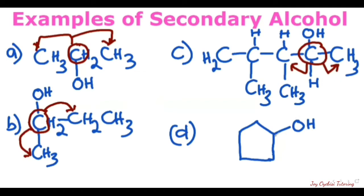For cyclopentanol here, in line structures like this, they do not write out the atoms, but we know that each of these points is a carbon. Looking at this clearly, we can see that this carbon here is attached to this other carbon and this other carbon — that is two of them — so that is why it is a secondary alcohol.